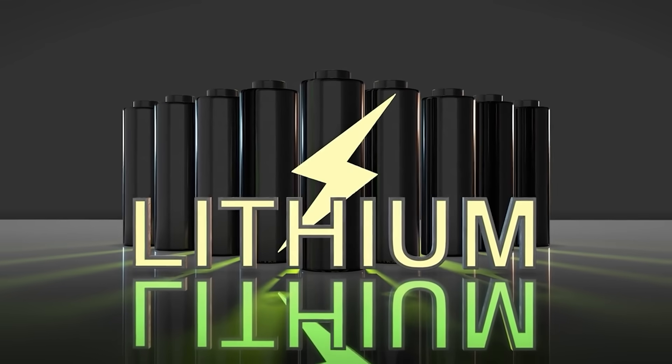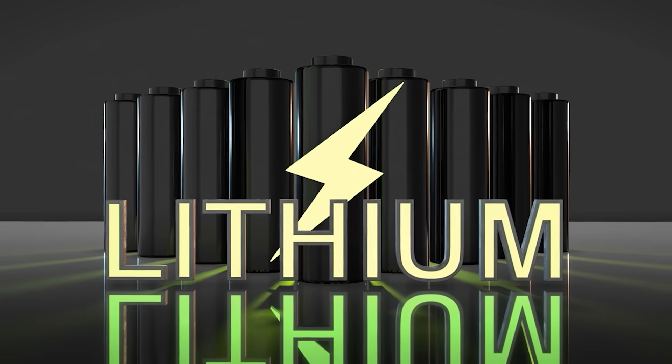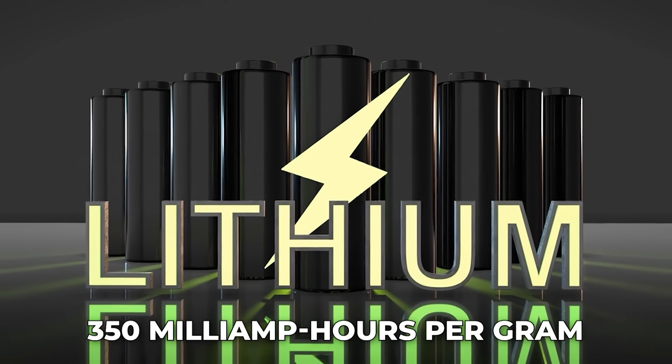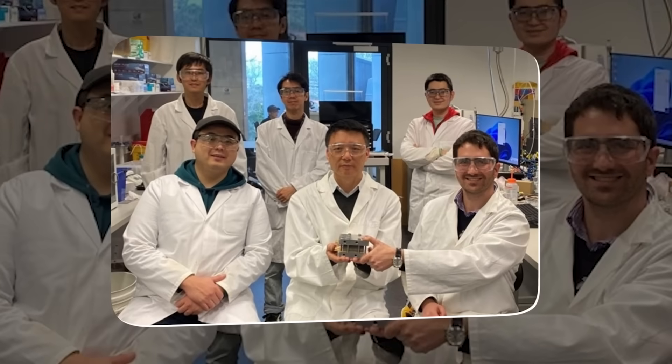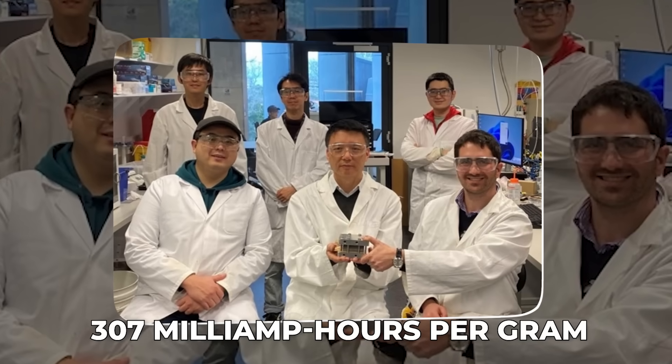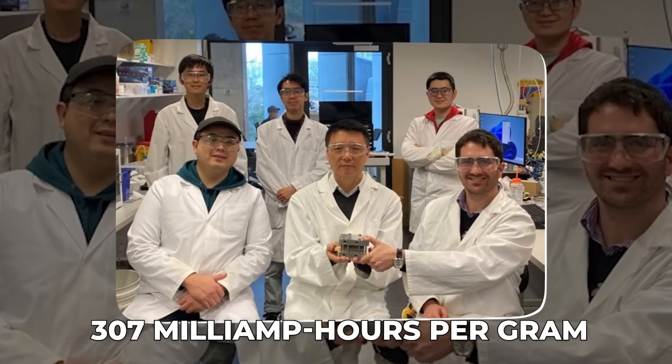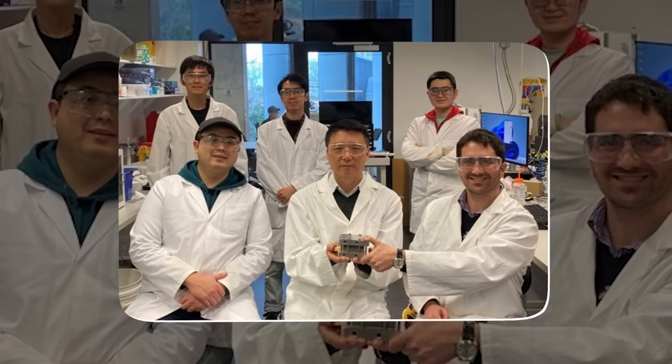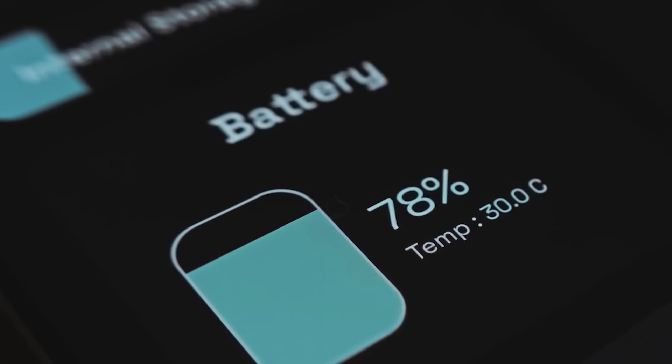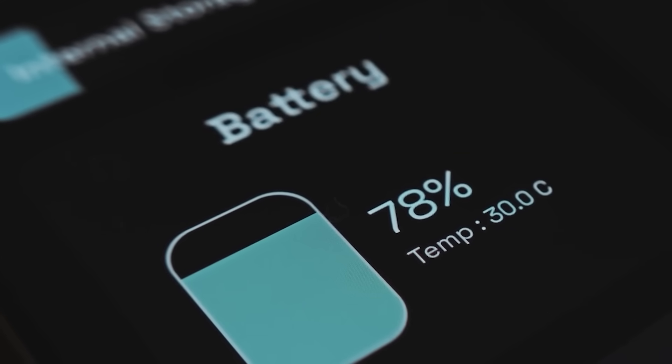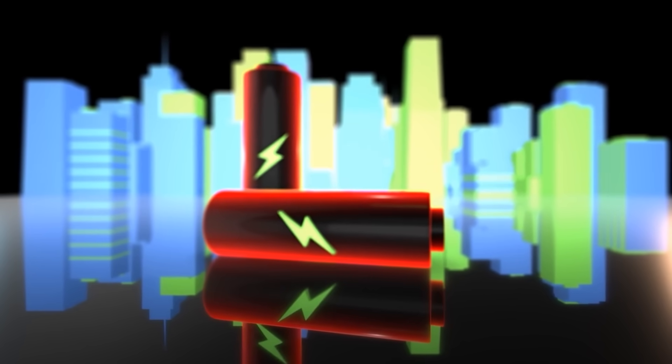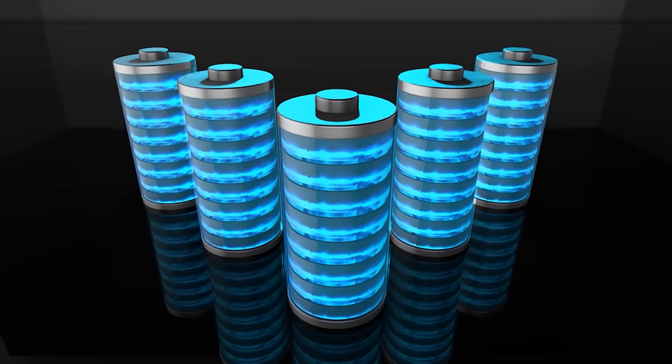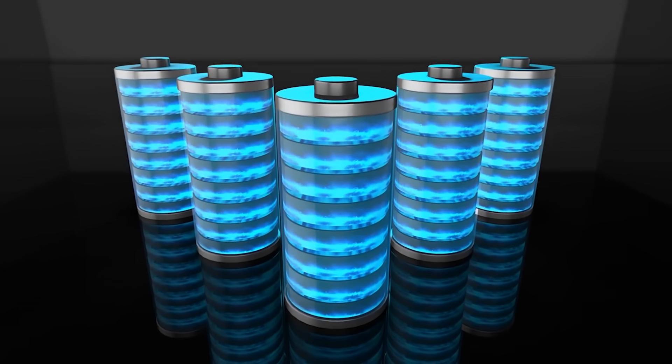Performance-wise, the numbers are surprisingly close. A typical lithium-ion anode can reach about 350 mAh per gram, while the UNSW proton battery achieves 307. It's slightly lower, but the gap is small for a technology that's still in development. Temperature performance is another big win for proton batteries. Lithium systems often degrade in cold or overheat in hot conditions. The proton battery keeps working reliably in both extremes.